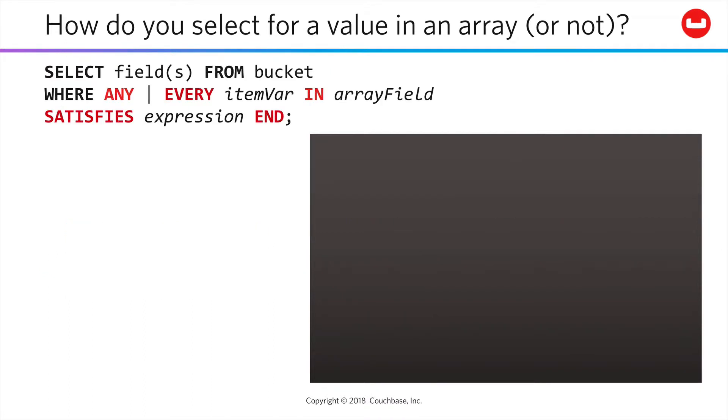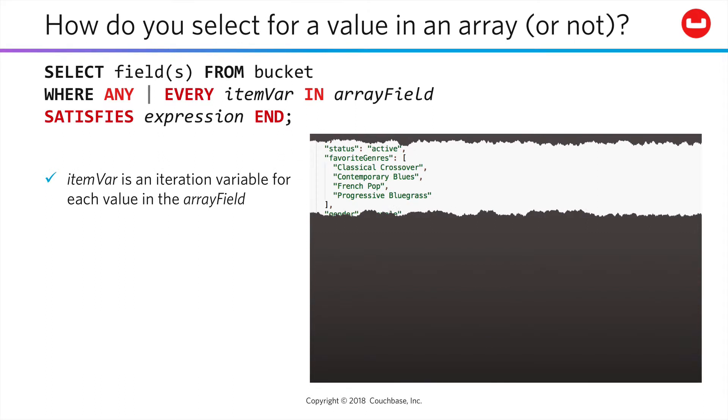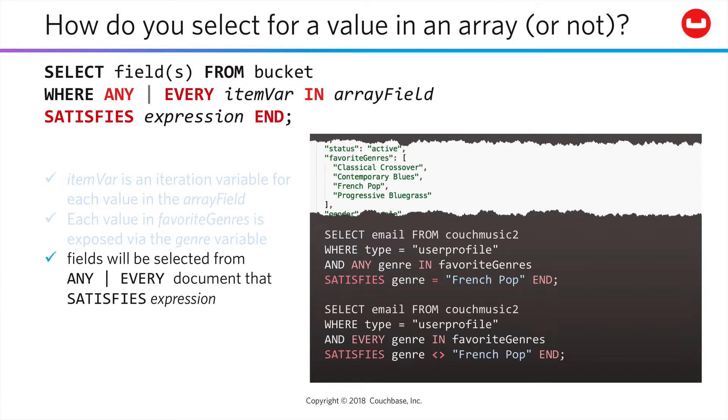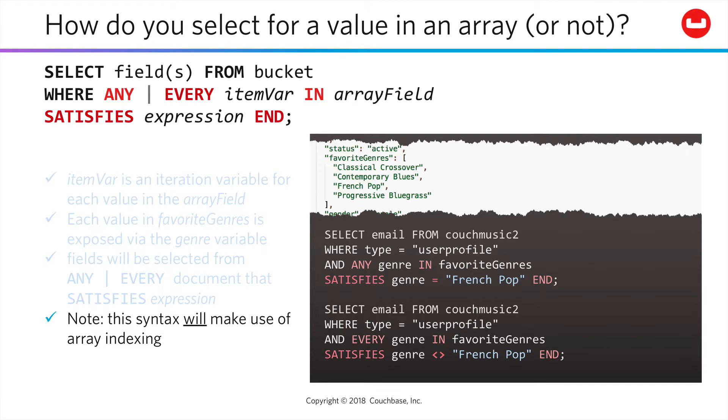As an alternative syntax, you can write a filtering expression which iterates and tests the values. In a WHERE clause, you define an iteration variable for the array field. Each value in that field is then tested in turn for whether it satisfies a defined expression. As appropriate, you can test whether ANY field satisfied the expression or whether EVERY field must satisfy it. This approach to filtering by array values does make use of the array indexing you may have created.